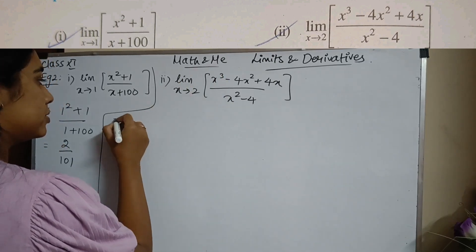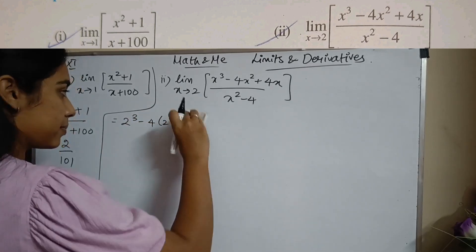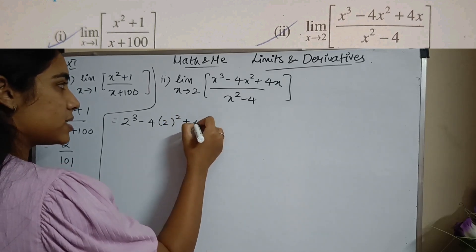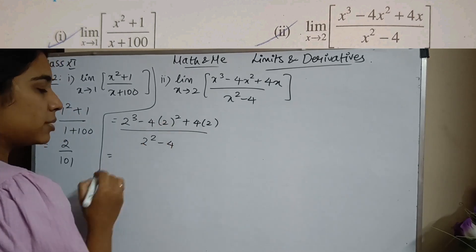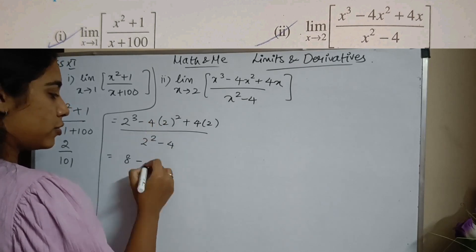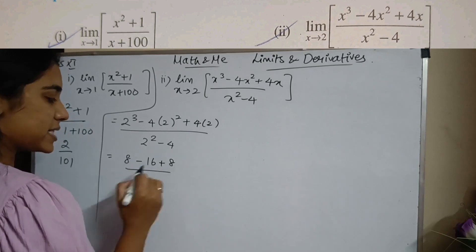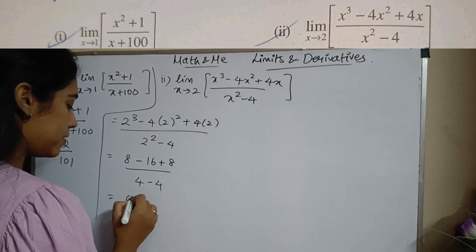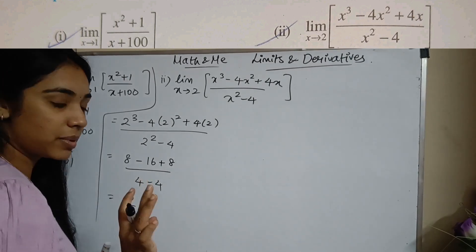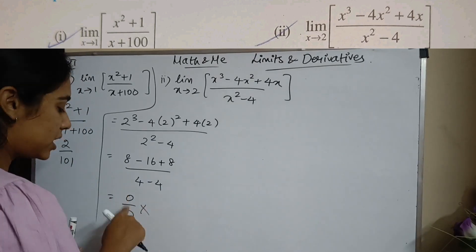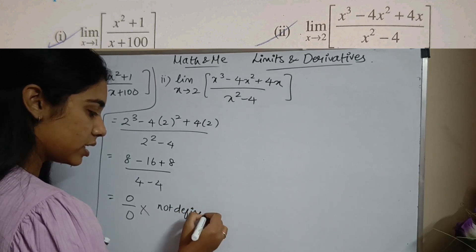Moving on to the next subsection, substituting x = 2: I have 2³ minus 4 times 2² plus 4 times 2, divided by 2² minus 4. The numerator gives 8 minus 16 plus 8 = 0, and the denominator gives 4 minus 4 = 0. So I'm getting 0 by 0, which is not defined — I should never have a 0 in the denominator.